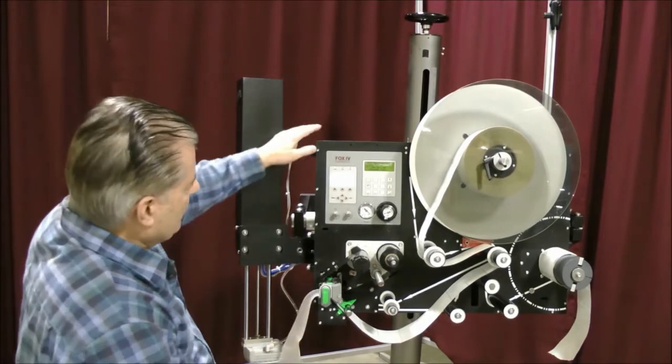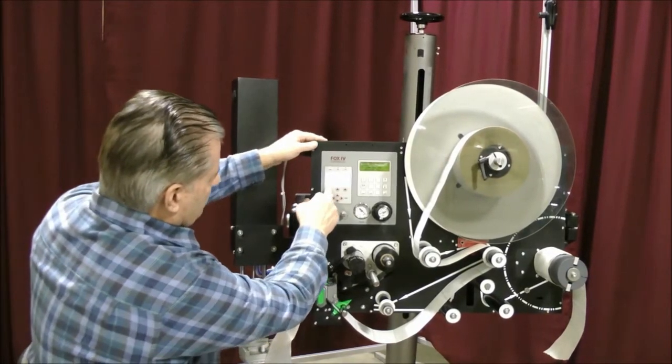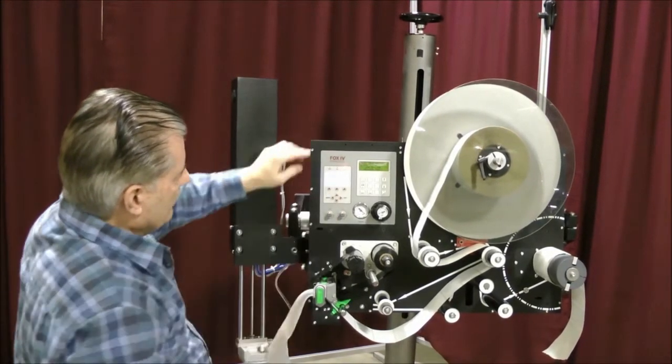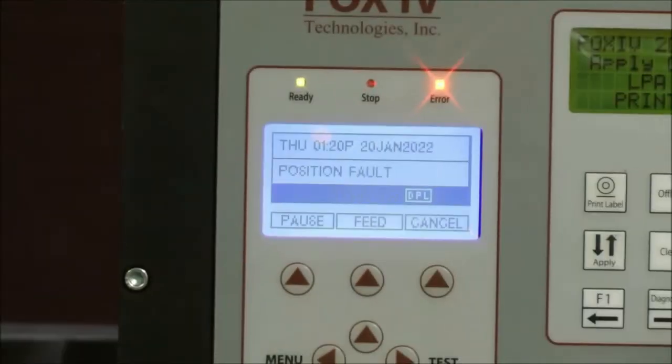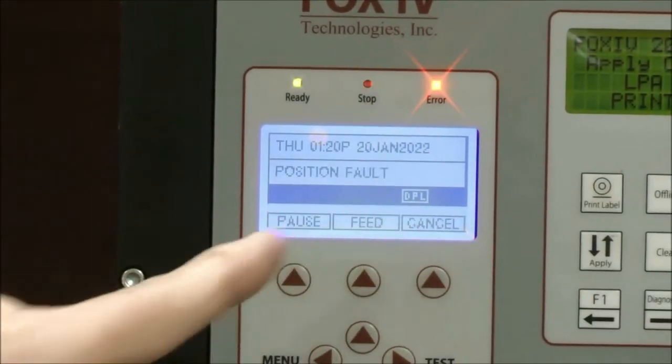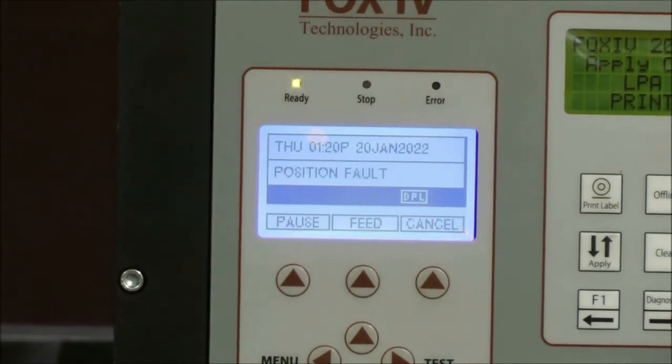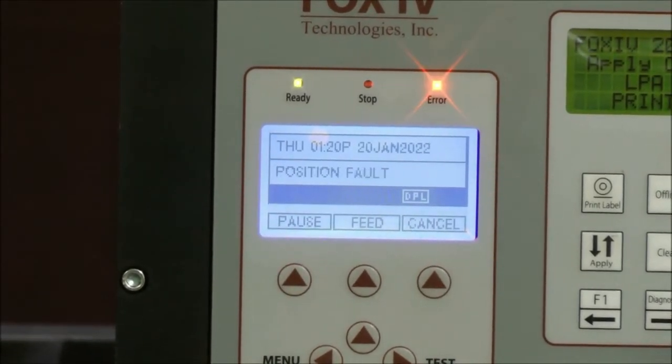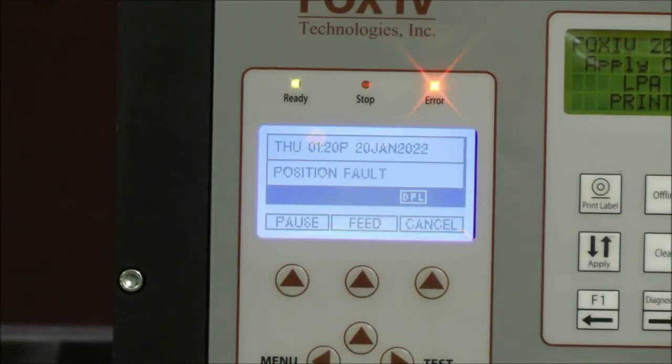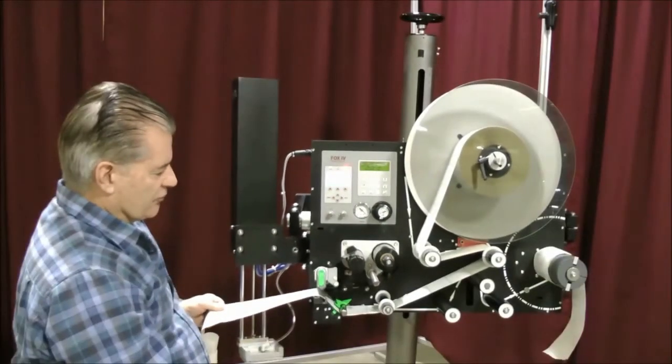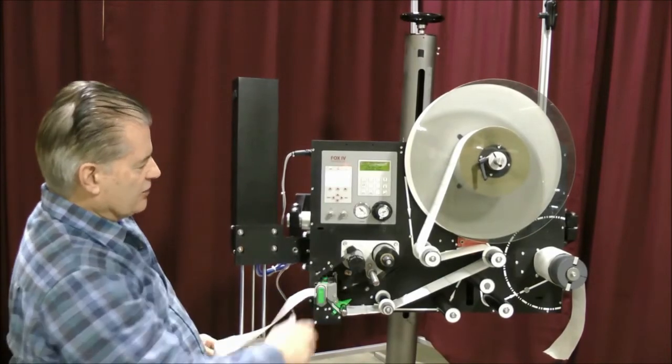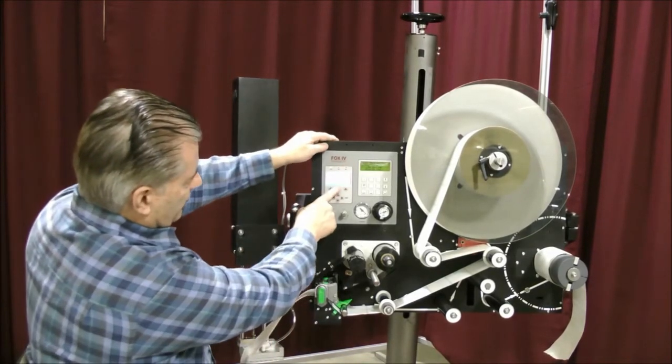So now what you're going to do now is escape out of the menu all the way out, exit, and you're going to see a position fault as a normal fault when you're done calibrating. So what I want you to do is pull some labels through, close the head and press and hold the feed button again.